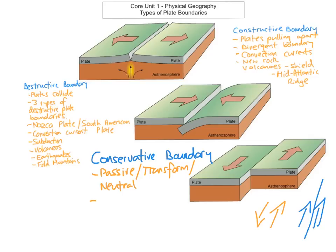Where the plates are actually sliding past each other, we call these transform faults. An example you need to know is the San Andreas Fault, which is in California along the west coast of America.